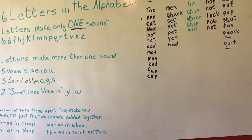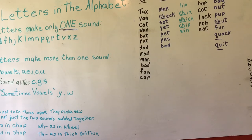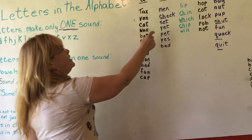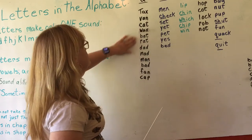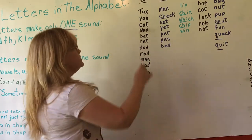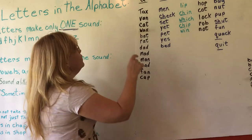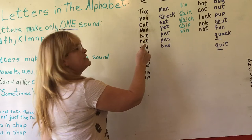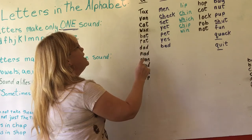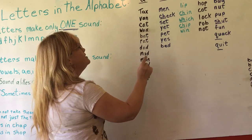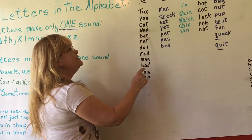Some say ABC order, alphabetizing, or alphabetical order. Our main vowels are A, E, I, O, and U. We're going to go over these words, sound them out with proper sounds, and say the word. T-A-X — tax. V-A-N — van. C-A-T — cat. W-A-X — wax. V-A-T — vat. B-A-T — bat.